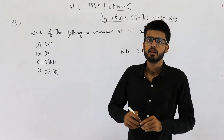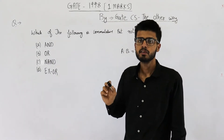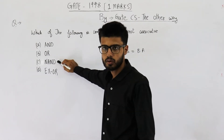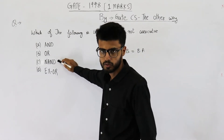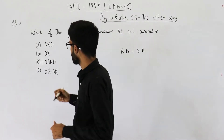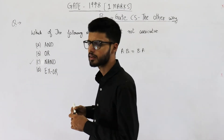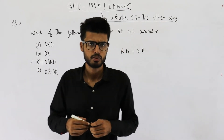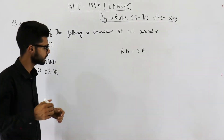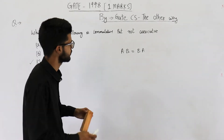Memorize that universal gates are not associative. So NAND as well as NOR — they are not associative. So your answer is option C. We'll also prove that NAND is not associative, but first let's discuss what associativity is.